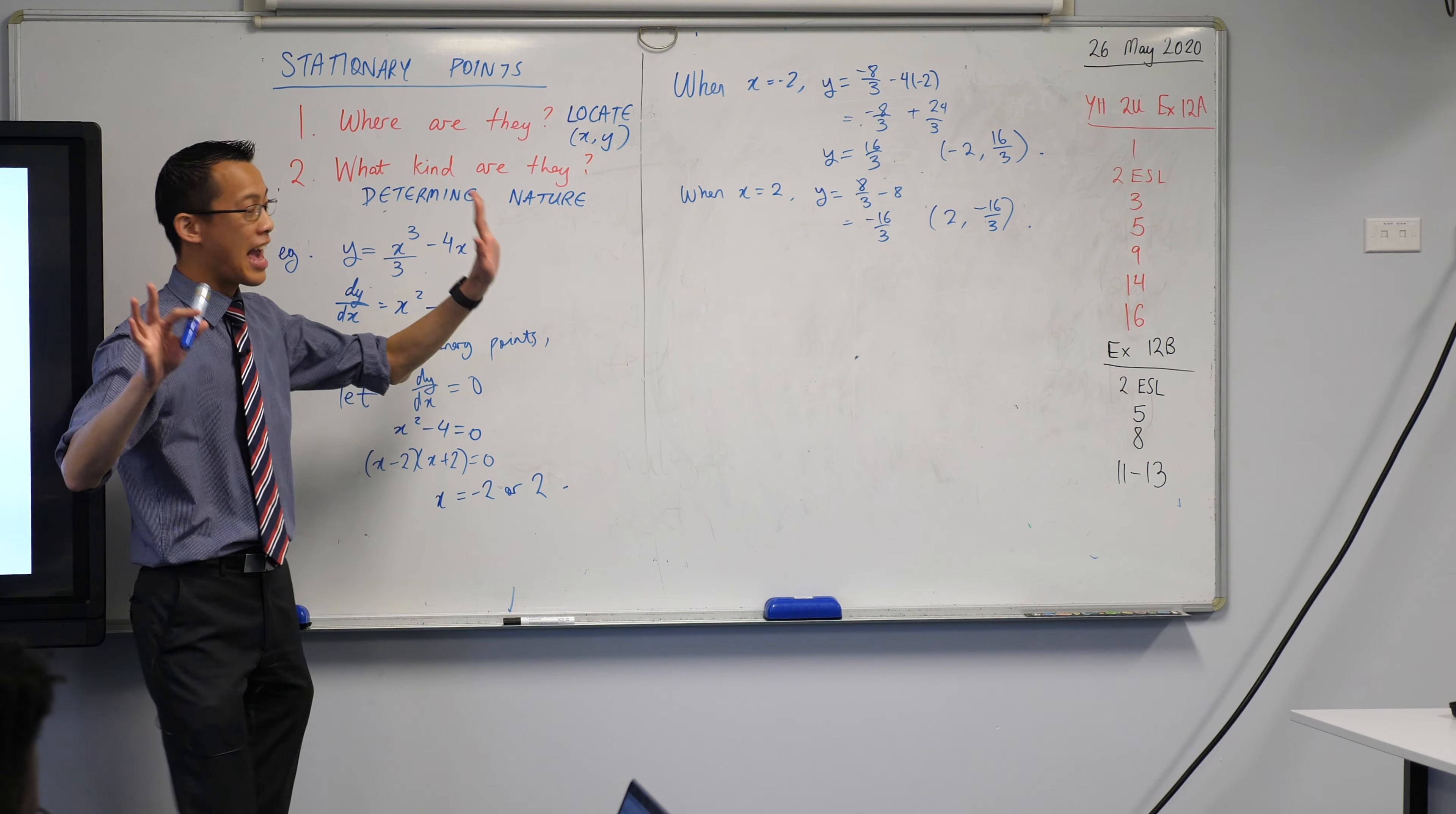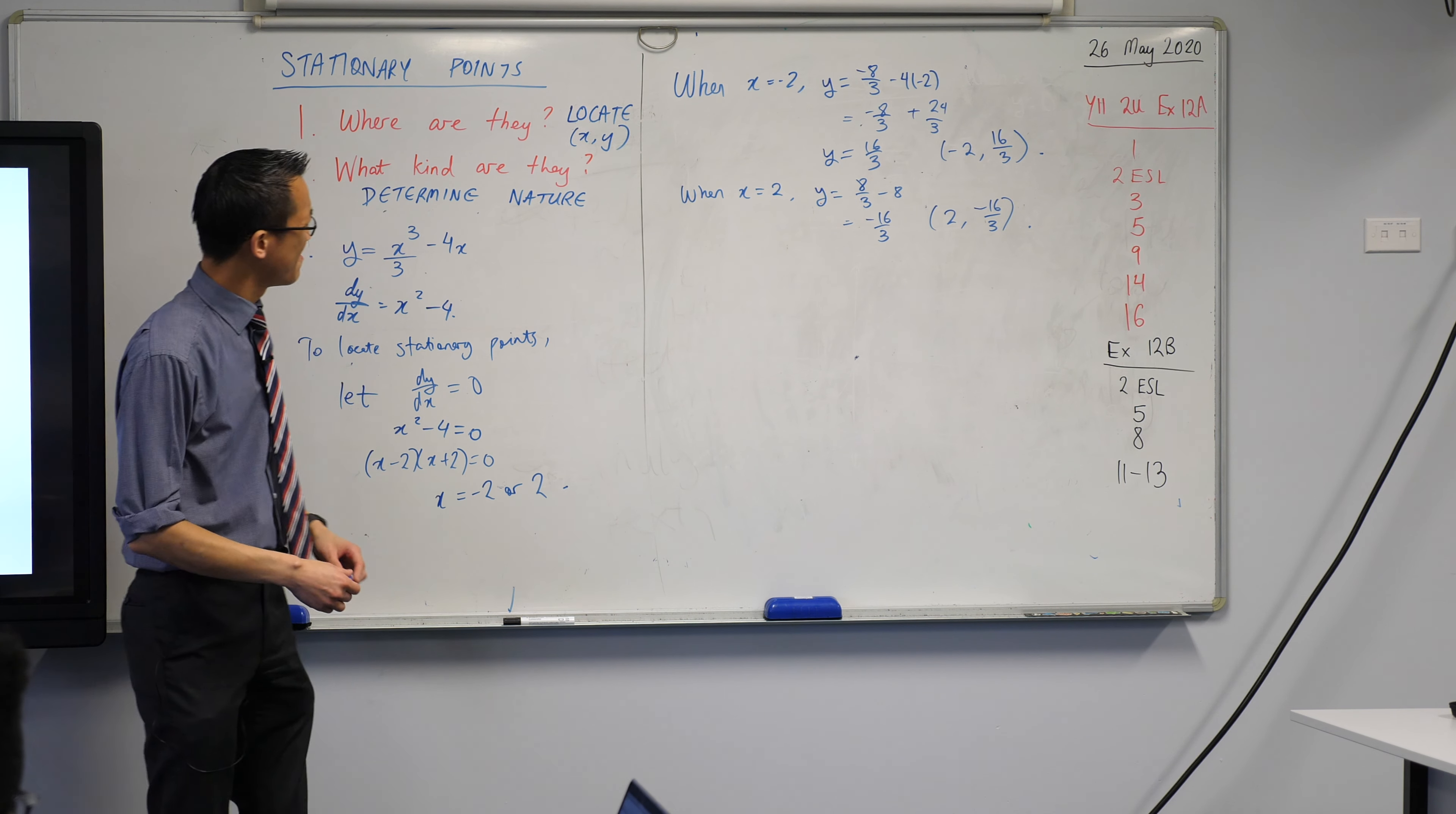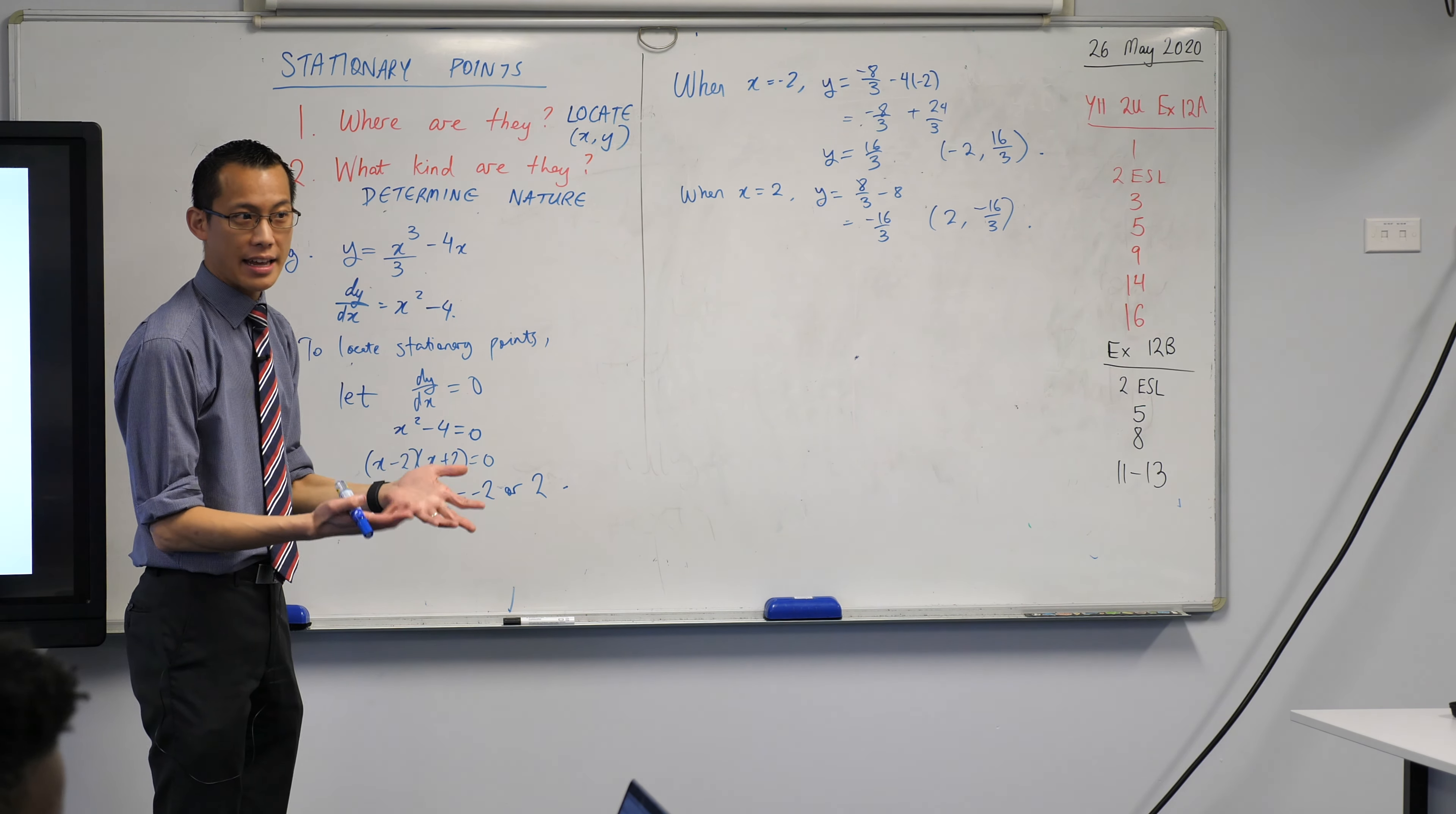So check, I have located my stationary points. There's the first one right there and then there's the second one, but I don't know what kind they are. It could be any of these, right? Now as you're going to discover there's more than one way to actually solve this next question of determining the nature, but what I want to do is just use the tools we have at our disposal.